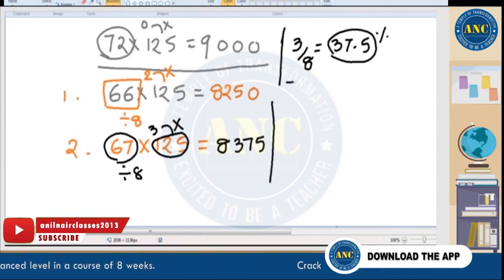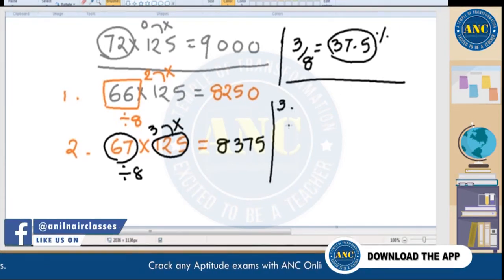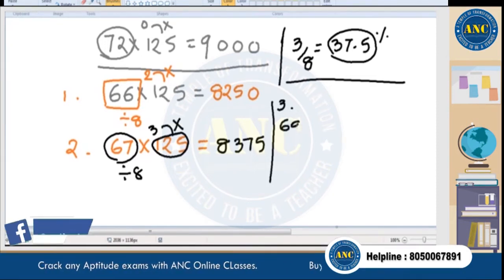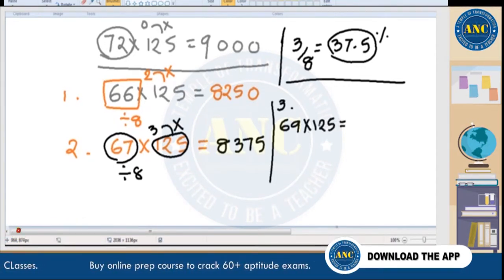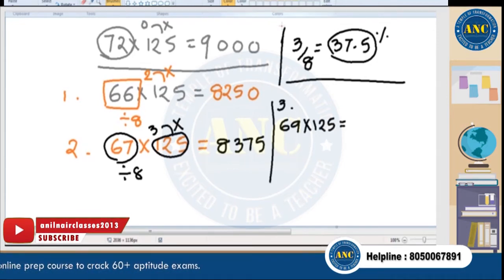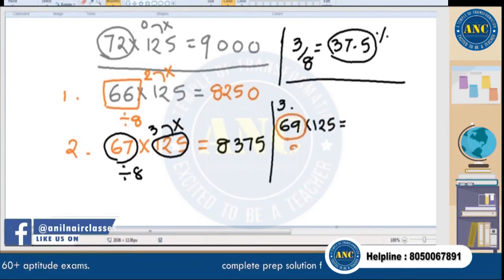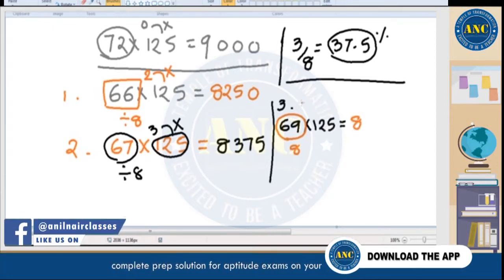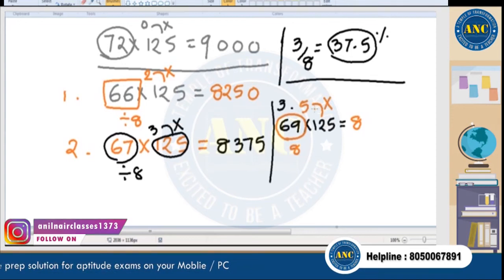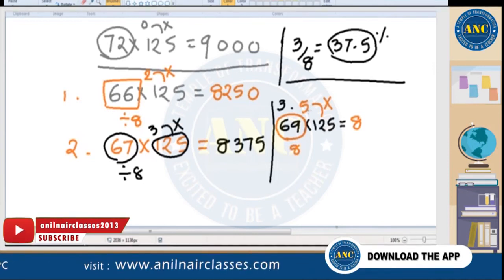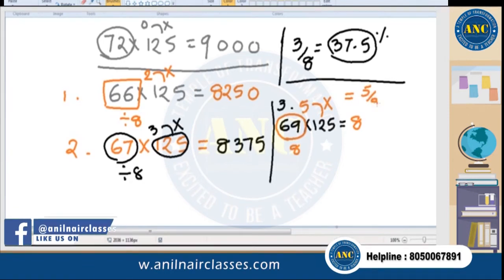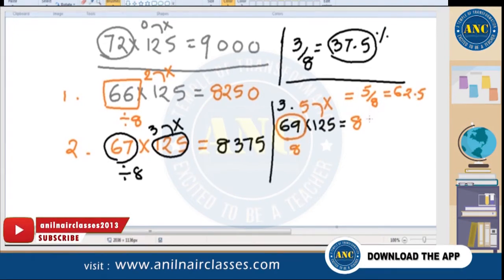Next example: 67 × 125. Divide 67 by 8 — 8 eights are 64, remainder is 3. So 3 × 125 means treating it as 3/8. What is 3/8? It is 37.5%, meaning 3 × 125 = 375. So the answer uses 375 for the remainder portion.